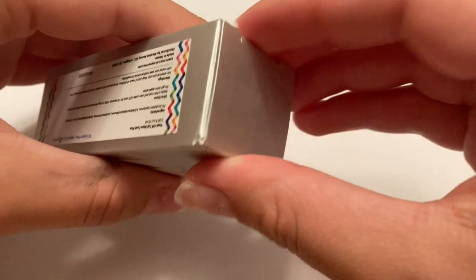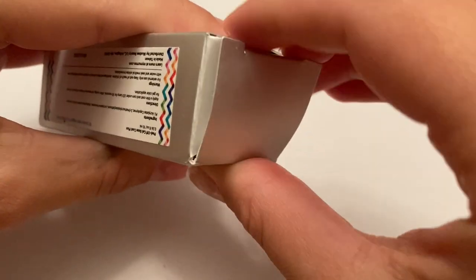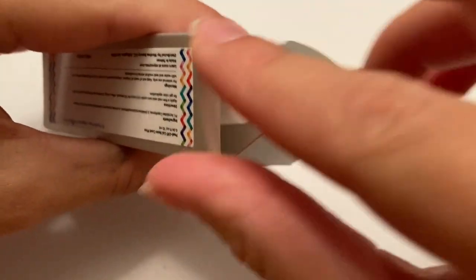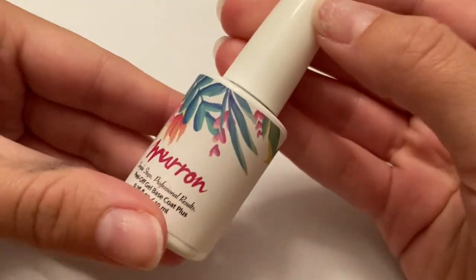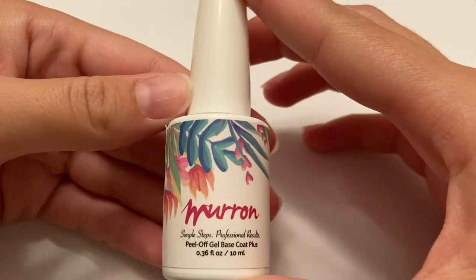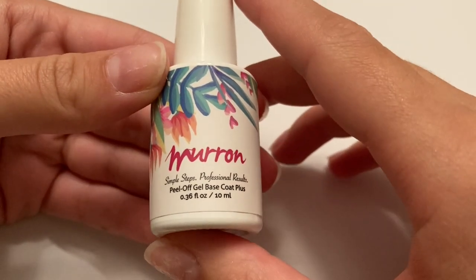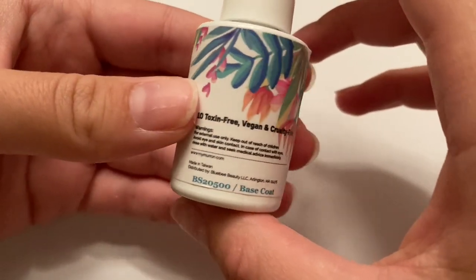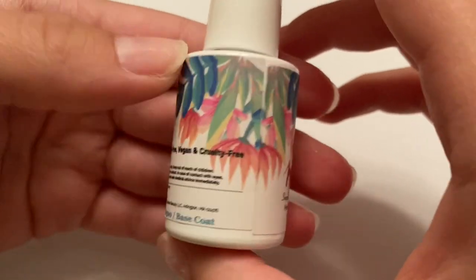So it is a gel polish base coat, so you do need a curing lamp for it. A few highlights about this product is that it is ten toxin free, which means that the top 10 most toxic chemicals that tend to be in a lot of nail products are not in this peel-off base coat. So that is really nice and it is also vegan and cruelty free.